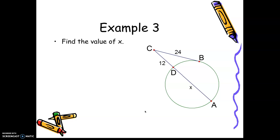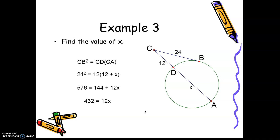Example 3 is where you have the tangent and the secant. It's the tangent squared — the part on the outside multiplied times itself — so 24 times 24. Then the secant part on the outside is 12, times the sum of 12 plus X, the length of the whole secant. As you work that one through, you solve for X being 36. That's it for the notes — go back and watch it again if you need to.